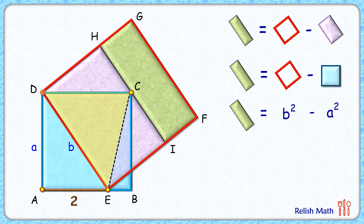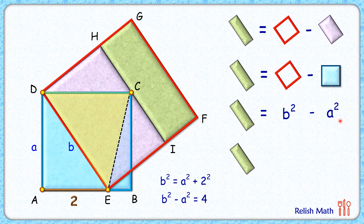Considering right triangle DAE and applying the Pythagorean theorem, we get: b squared equals a squared plus 2 squared. Rearranging, b squared minus a squared equals 4. Substituting this result, the area of the green rectangle is 4 centimeters squared. That's our answer!